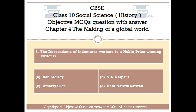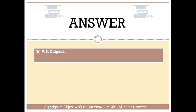Question number 8. The descendant of indentured workers who is a Nobel Prize winning writer is: Option A: Bob Morley. Option B: V.S. Nepal. Option C: Amartya Sr. Option D: Ramnaresh Sarwan. The right answer is Option B: V.S. Nepal.